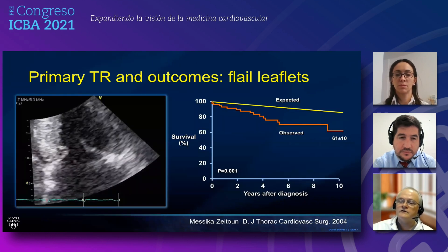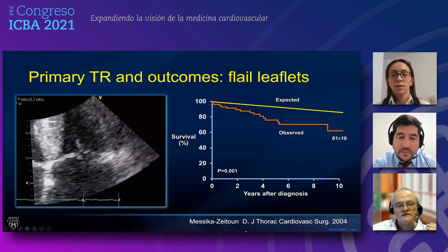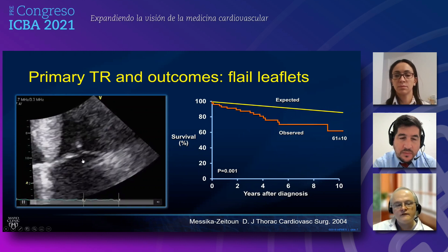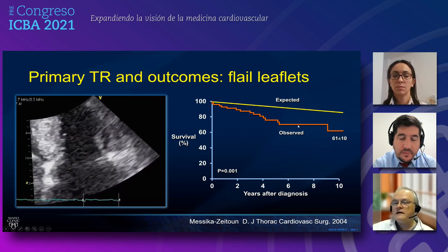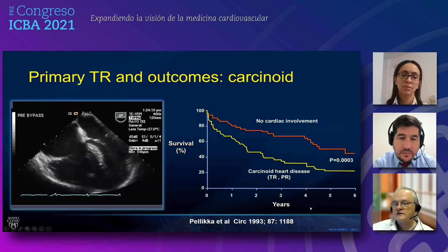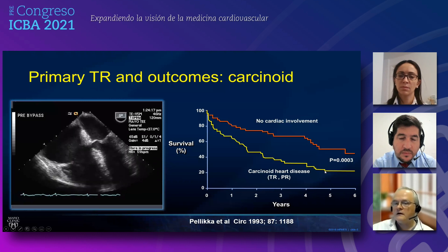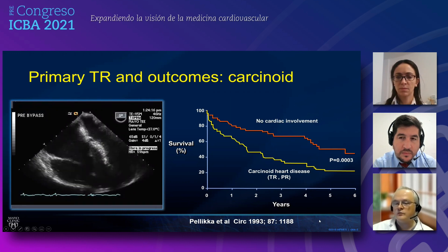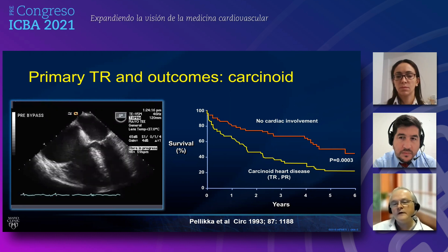Let's look back a little. There's data from the same year, 2004, when David Messika-Zeitoun was a young fellow at Mayo Clinic working with Maurice. There's clear data that flail leaflets have excess mortality. If you have a patient with a flail leaflet after a biopsy, you cannot leave that in place — that's not going to go well. There's clearly more observed mortality than expected for patient age and gender. And if you have carcinoid, almost 30 years ago Patty Pellikka showed that carcinoid patients with right heart involvement — meaning TR or PR — clearly have excess morbidity compared to those without cardiac involvement. So there's clearly an impact of organic heart disease on mortality. If you have organic heart disease with severe tricuspid regurgitation and the patient is at acceptable surgical risk, you should probably correct it.